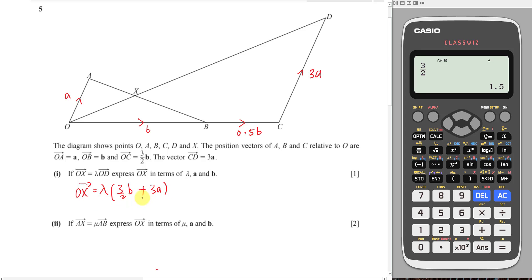But normally I don't like to leave my answer like this. I will just multiply lambda into both of them and I prefer to write A first: 3 lambda A plus 3 over 2 lambda B. I prefer to leave my answer in this form because I guess later I need to do the comparing.